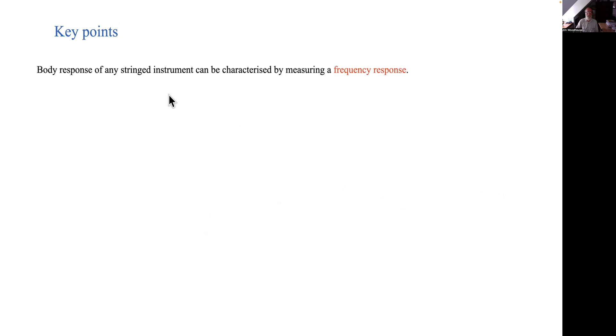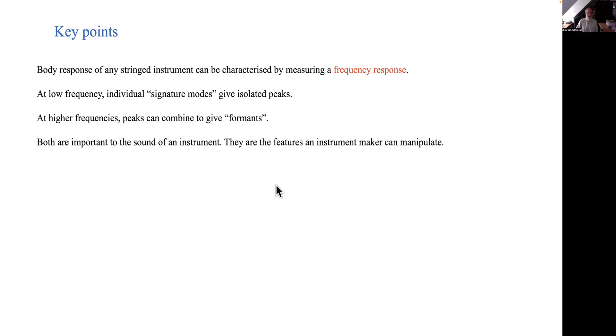So what we've learned in this talk and previous ones: the body response of any stringed instrument can be characterized by measuring this frequency response function at the bridge. You look at that and say okay what is that telling us. At very low frequencies the individual signature modes of the violin body or guitar body or whatever give you identifiable isolated peaks. But at higher frequencies things are more complicated but sometimes, and in the violin was an example we saw, those peaks can combine to map out these things called formants.